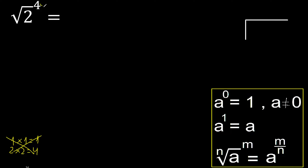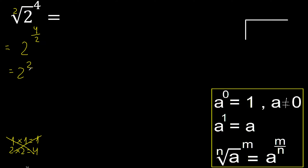4 is greater and can be divided. 4 can be divided by 2, therefore like this, here: 4 divided by 2 is 2. 2 multiplied 2 times is 4.